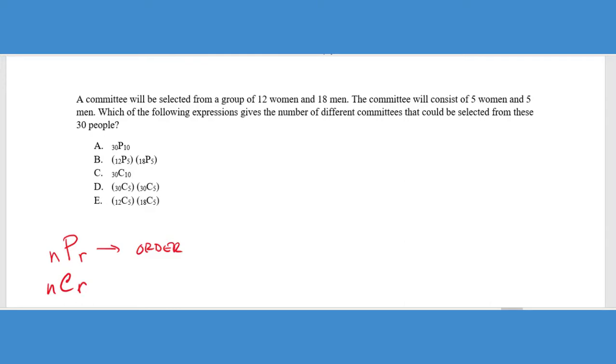So if we look at this particular problem, it says a committee will be selected from a group of 12 women and 18 men. The committee will consist of five women and five men. Which of the following expressions gives the number of different committees that can be selected from these 30 people? So the first thing that you got to be careful of is this 30 is really bait or useless information in this way. What we have here is we actually have two events going on. We have the selection of a certain number of women for the committee and we have a selection of a certain number of men for the committee. And of course, those are two different events that could happen and we're going to multiply those two events together. We can see right off the bat from the answer choices that A and C should be wrong.